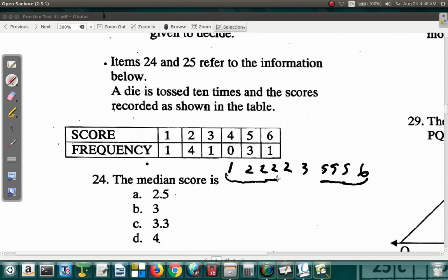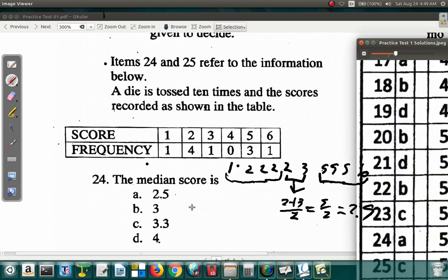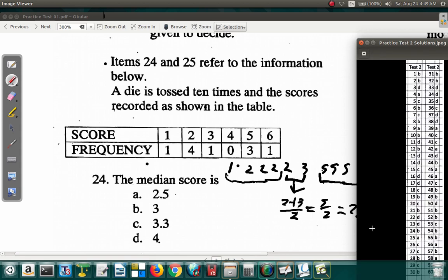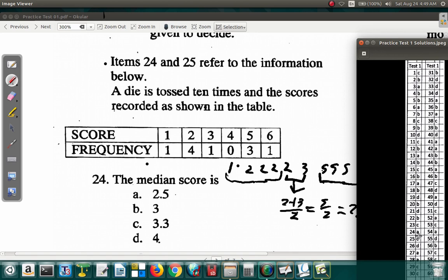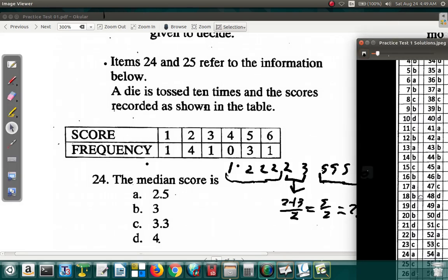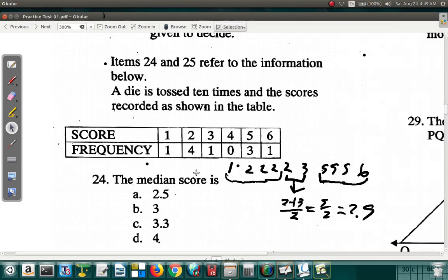Right. 2 plus 3 over 2. Because we have an even number of items. 2 of them. 2 scores here. We add them and divide by 2. So we get 5 over 2 is 2.5. This is what 24, question 24 is. A. In this case, it's 2.5. So, it's 2.5. Now, that's really what the situation is with this.